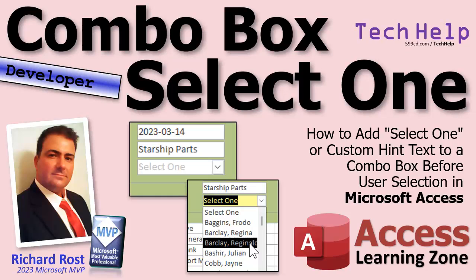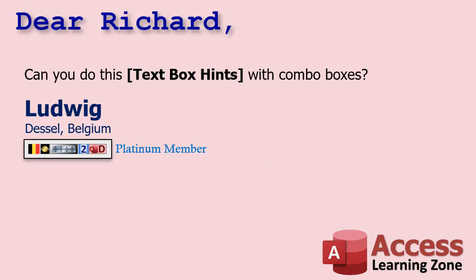Welcome to another tech help video brought to you by Access Learning Zone. I am your instructor Richard Ross. Today I'm going to show you how to put a 'Select One' gray option at the top of your combo box so users will see 'Select One' and then click. You can put whatever instructions you want there, like 'Pick a customer' or 'What's your favorite Starship?' — we'll show you how to do that in your combo boxes in Microsoft Access.